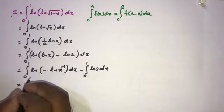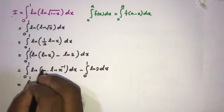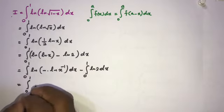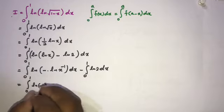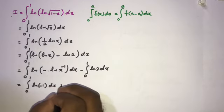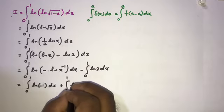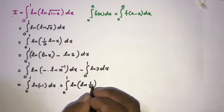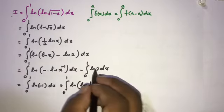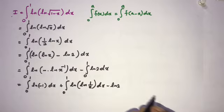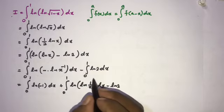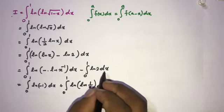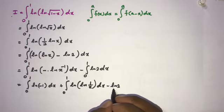Using logarithm properties, we can write this as ln(-1) plus the integral from 0 to 1 of ln(ln(1/x)) dx. Since ln(2) is a constant, it comes outside the integral sign, and the integral from 0 to 1 of dx equals 1, giving us minus ln(2).